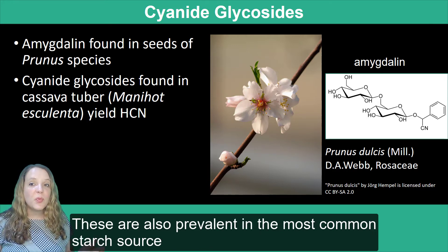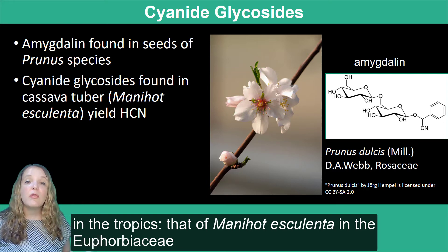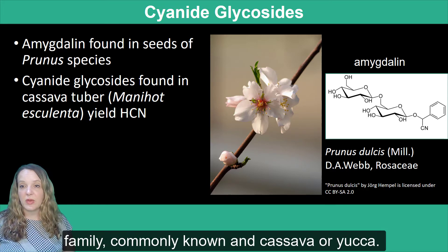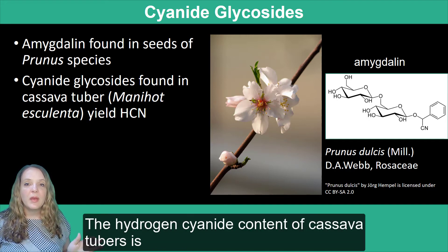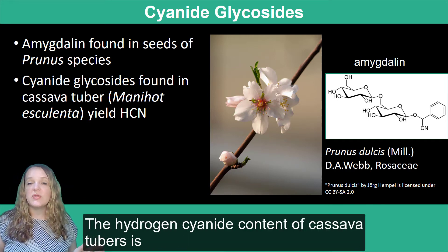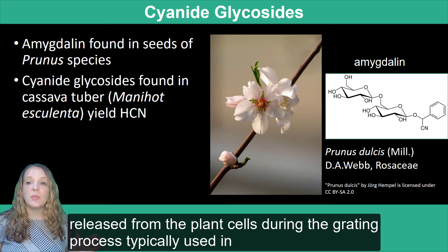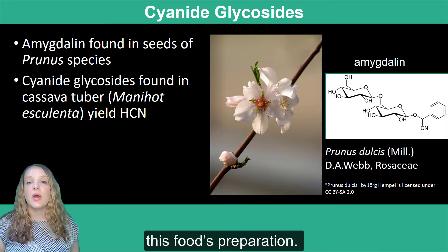These are also prevalent in the most common starch source in the tropics: Manihot esculenta in the Euphorbiaceae family, commonly known as cassava or yucca. The hydrogen cyanide content of cassava tubers is released from the plant cells during the grating process typically used in the food's preparation.